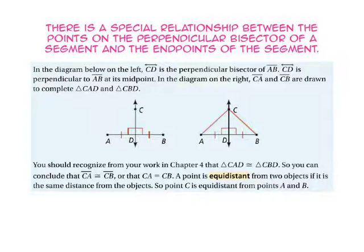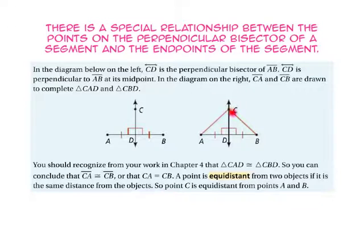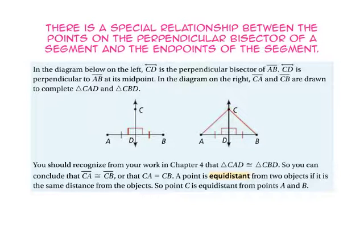There's a special relationship between the points on the perpendicular bisector of a segment and the endpoints of the segment. In the diagram on the left, line CD is the perpendicular bisector of segment AB — perpendicular to segment AB at its midpoint. In the diagram on the right, segment CA and segment CB are drawn to complete triangles CAD and CBD. Triangle CAD is congruent to triangle CBD by side-angle-side. Therefore by CPCTC, segment CA is congruent to segment CB, meaning the distance from point C to point A is exactly the same as from point C to point B.